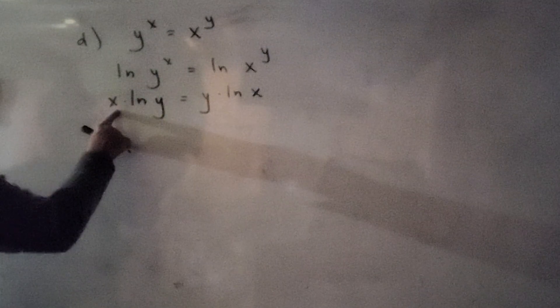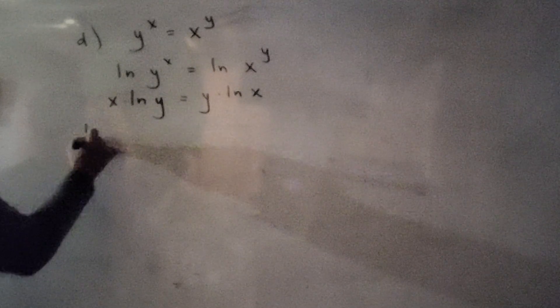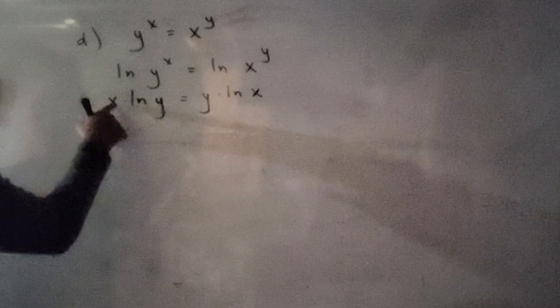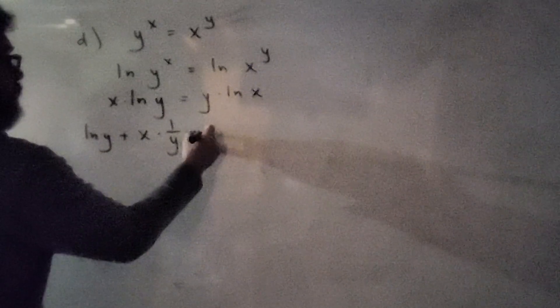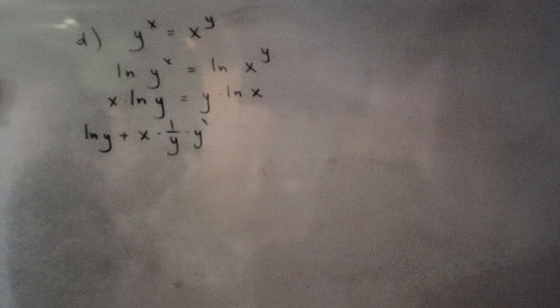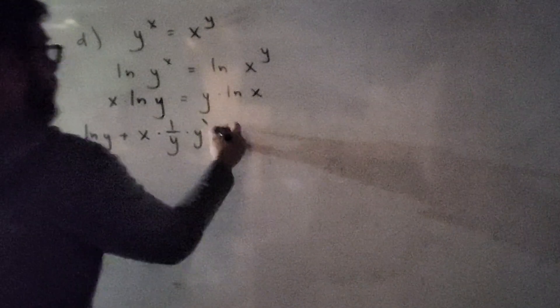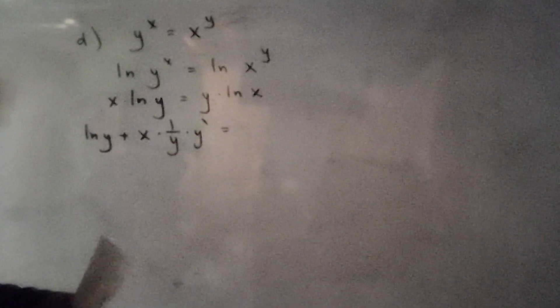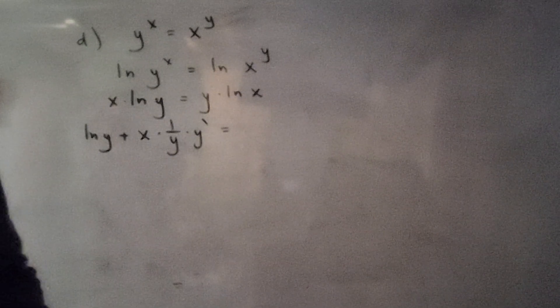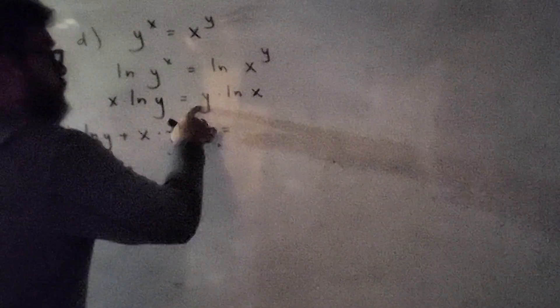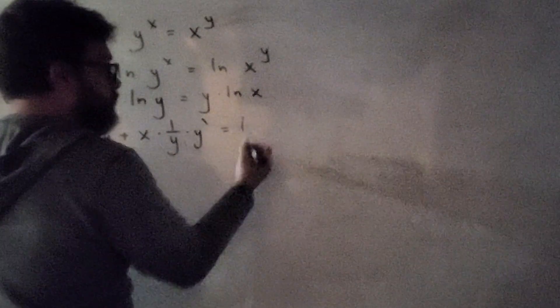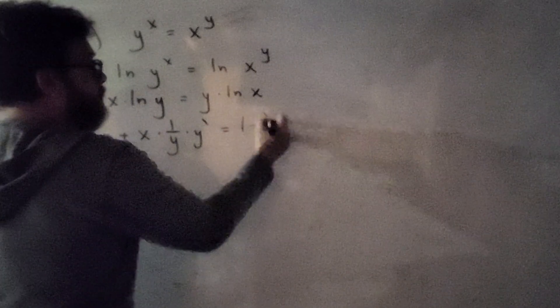Both sides require the product rule. Left side: derivative of x times natural log of y plus x times derivative of natural log of y, which is 1 over y times y prime. Right side: derivative of y times natural log of x, but remember — every derivative of y must be followed by y prime. So: y prime times natural log of x plus y times 1 over x.